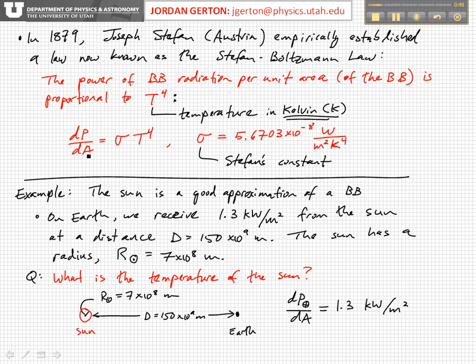And so we can, on one hand, use the Stefan-Boltzmann law to integrate over area. So we can find the total power radiated by the sun by integrating the Stefan-Boltzmann law over the total area of the sun, of the sun's surface.